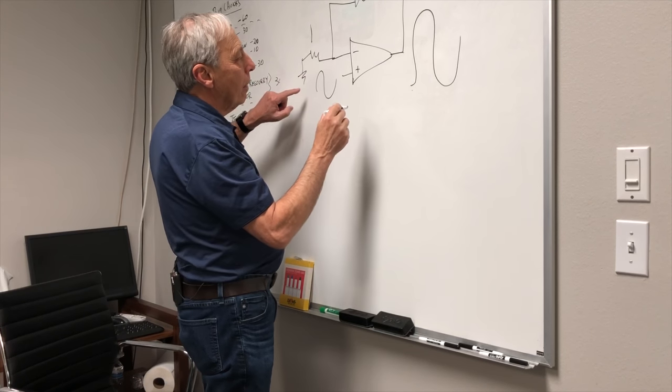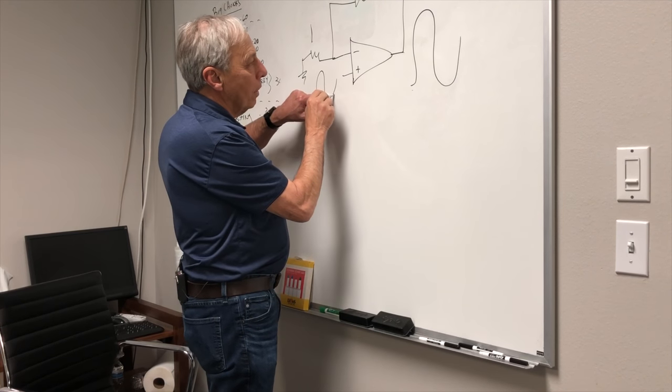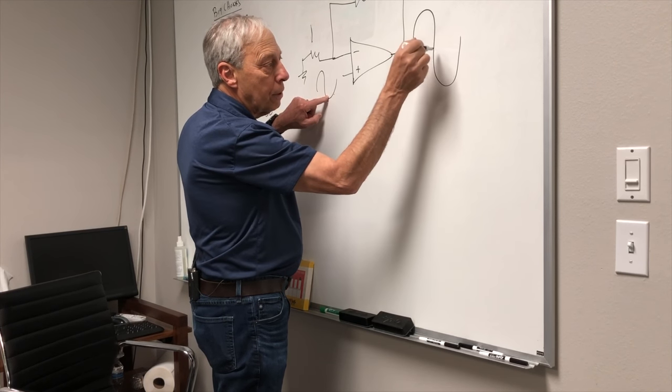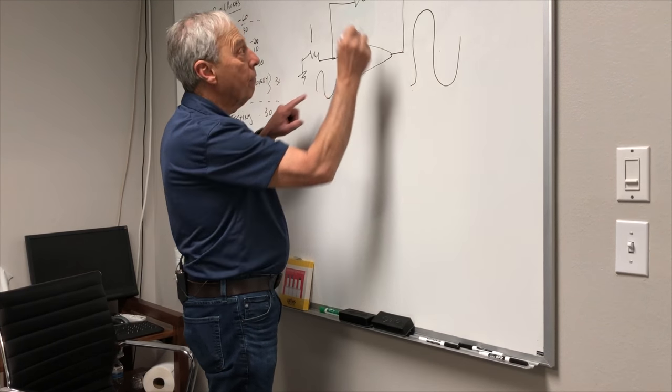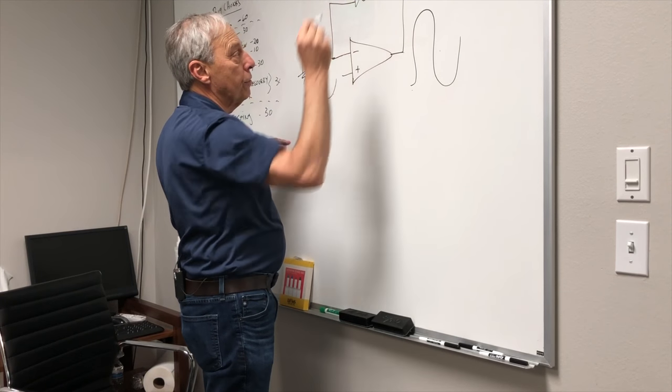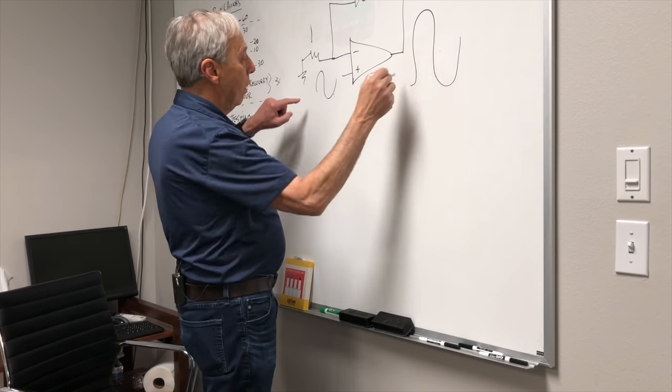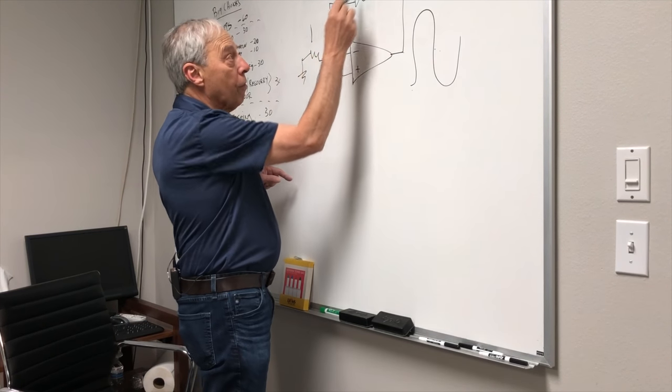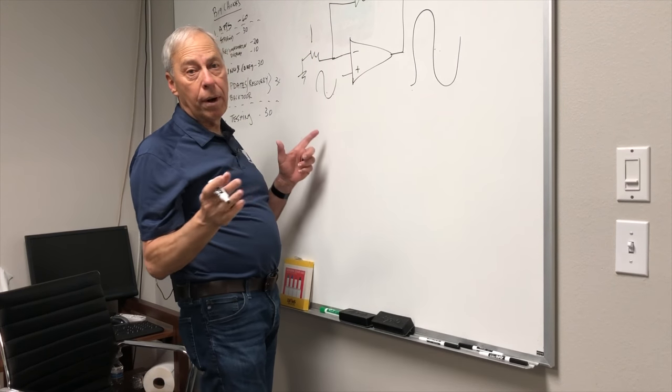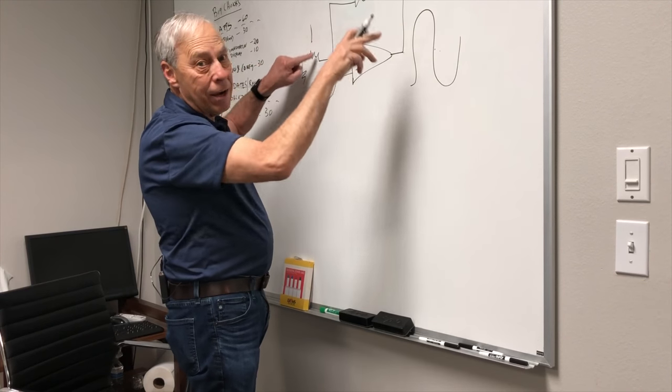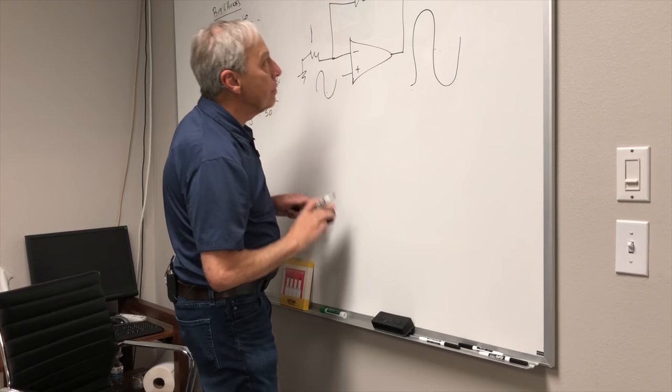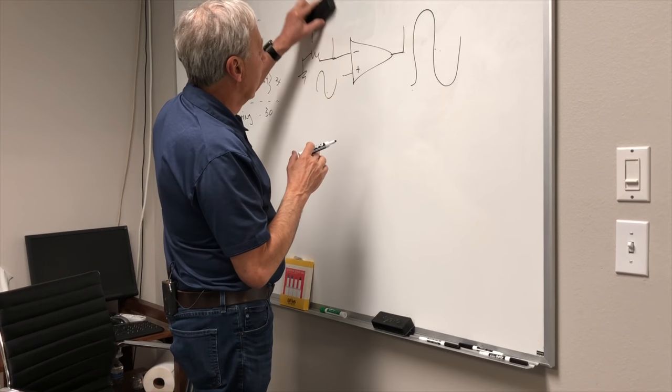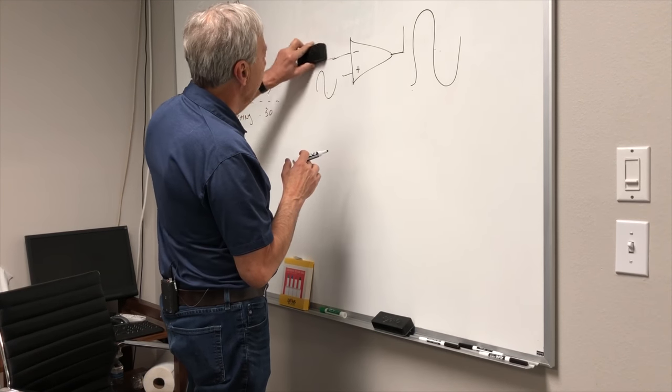Which means that whatever goes in here will be 10 times higher here. If I were to change this resistor to 20, then this would be 20 times bigger than this, or 30 or 40 or whatever I want. I can set the gain of that. And why is that? I'm going to try and do this quick so we don't get too mired into all this stuff.